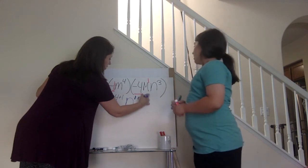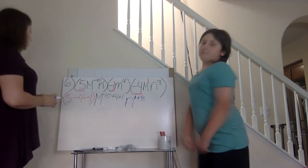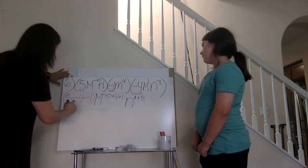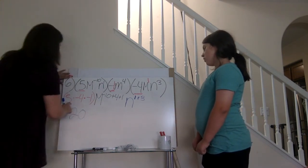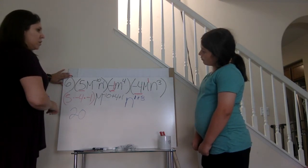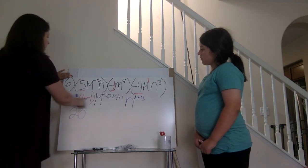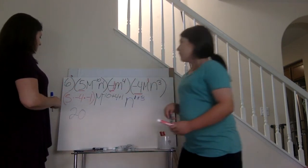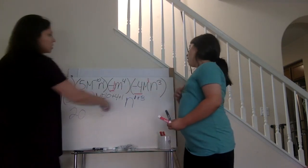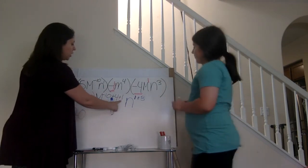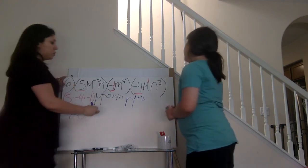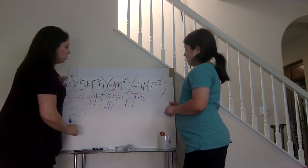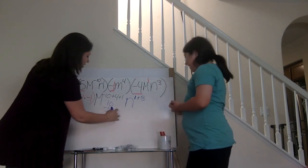Multiply everything together. What's five times four? Twenty. Is it going to be positive or negative? Positive — because negative times negative gives a positive. Now looking at the m exponents, I have negative ten, four, and one. Since I have different signs, we subtract one step at a time: ten minus four equals six, then six plus one equals seven.